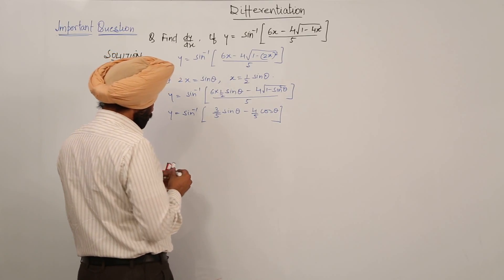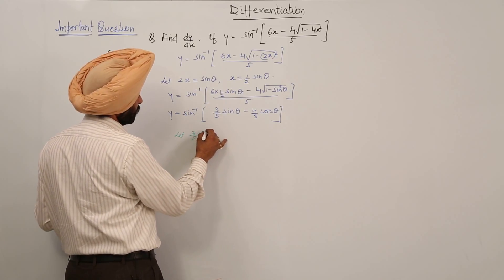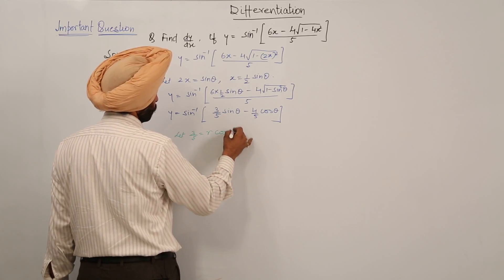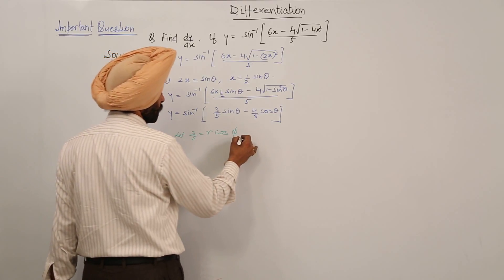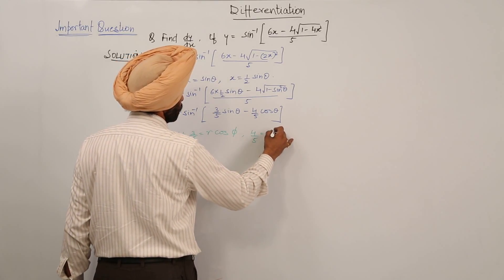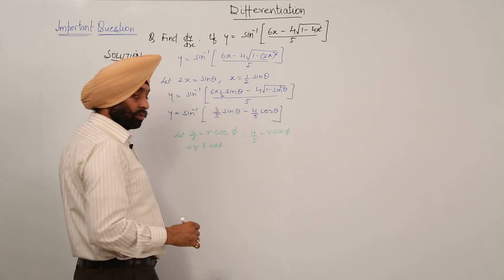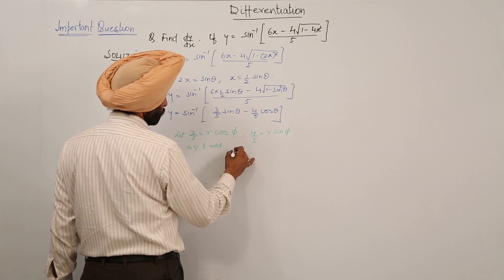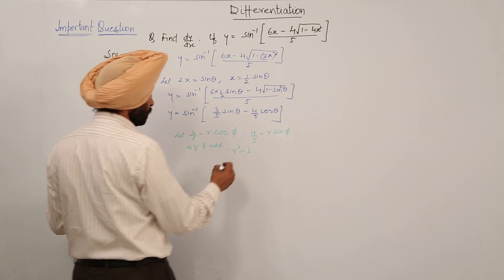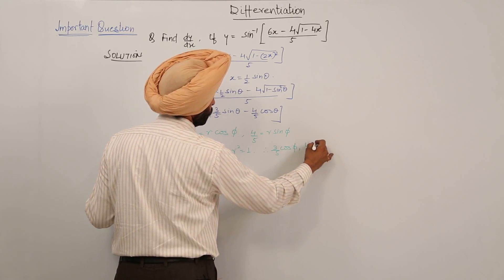Now what else we can do? We can write 3/5 as r cos φ and 4/5 as r sin φ. Squaring and adding, r² is equal to 1, so r equals 1. Therefore 3/5 equals cos φ and 4/5 equals sin φ.